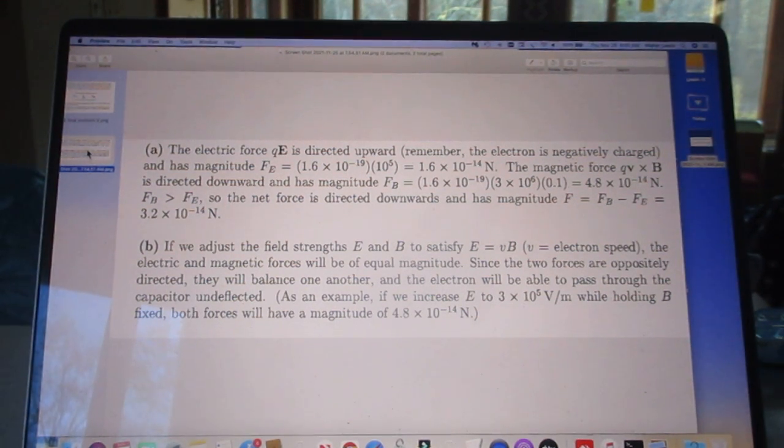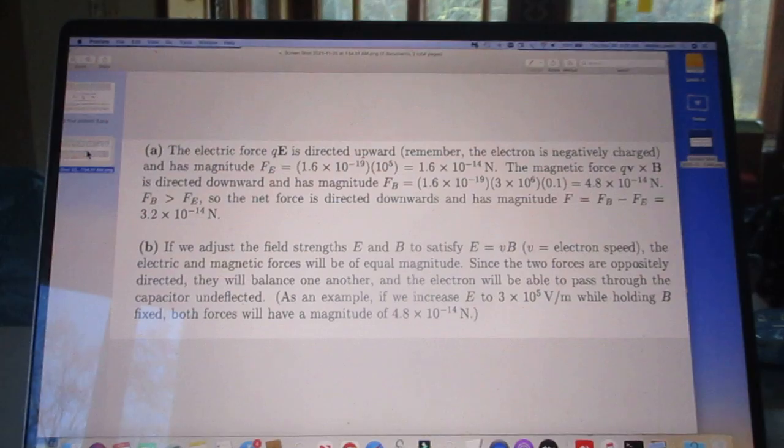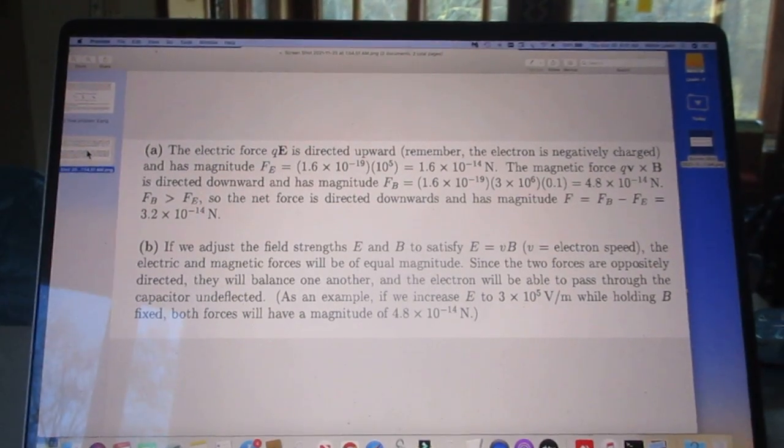The two forces, up and down, have the same magnitude, and therefore the electron can go through undeflected. Wow! Miracles do exist. That was a solution to problem 124.